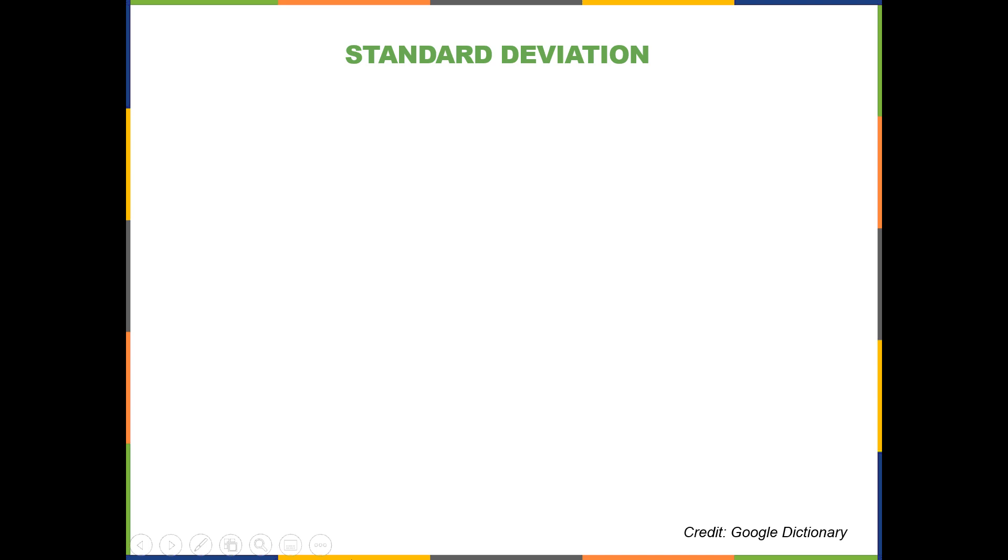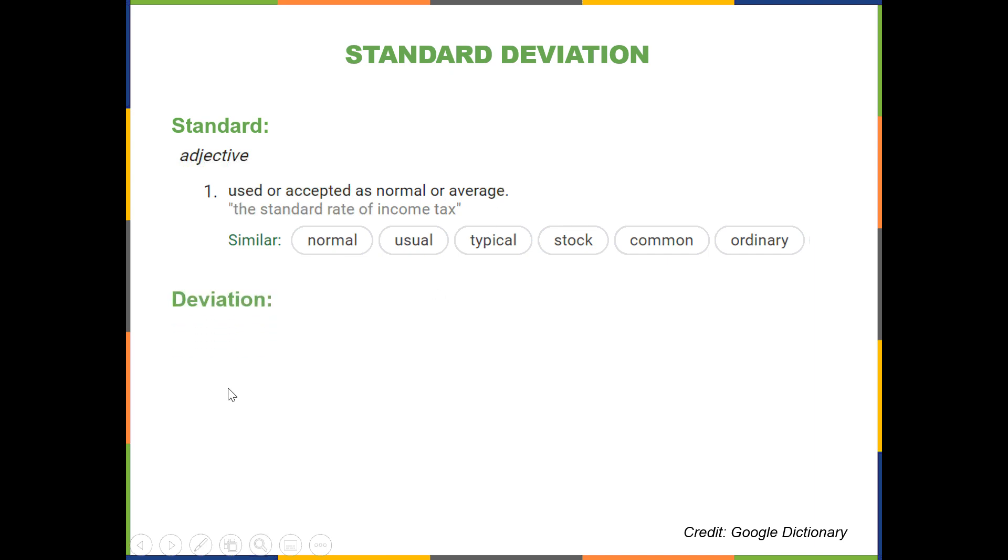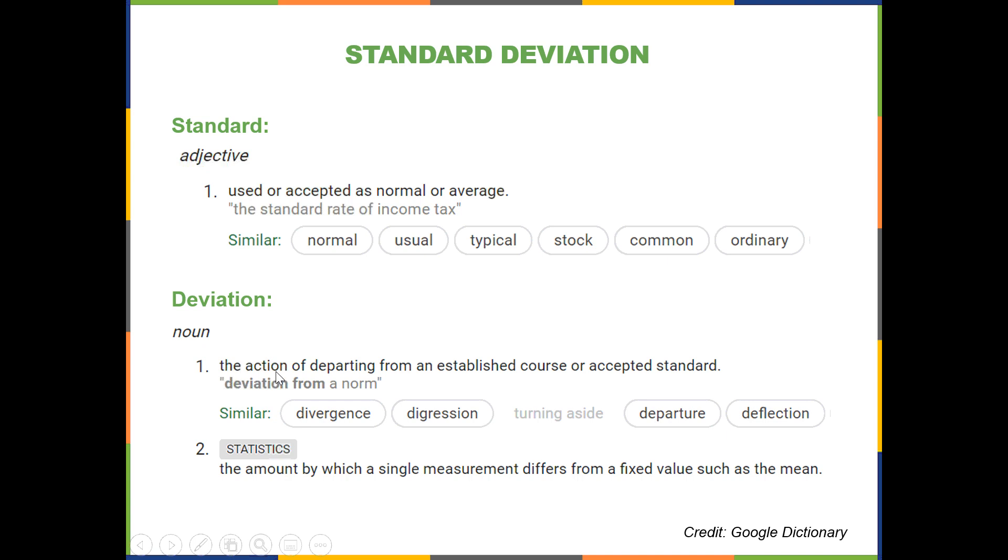Let's look at each of these words individually to gain more of a sense of what we mean when we say standard deviation. The word standard is something that's used or accepted as normal or average. The word deviation is the action of departing, or something that has deviated from an established or accepted standard, like diversion, digression, or departure.